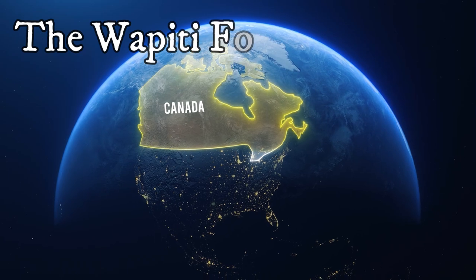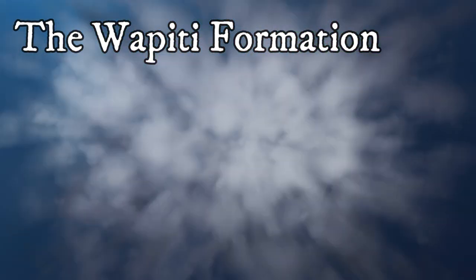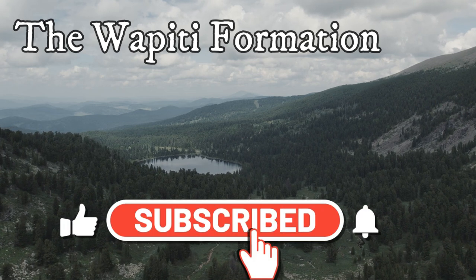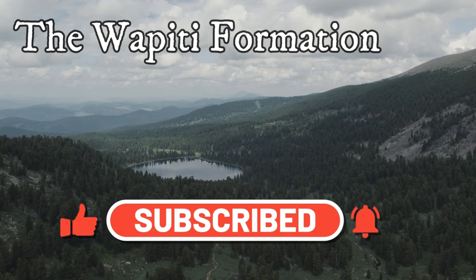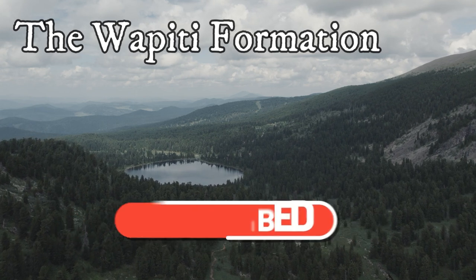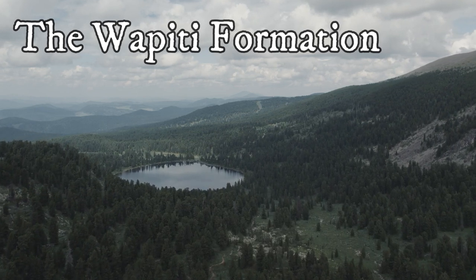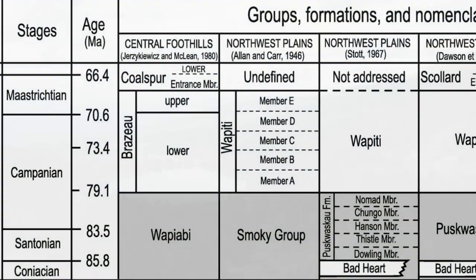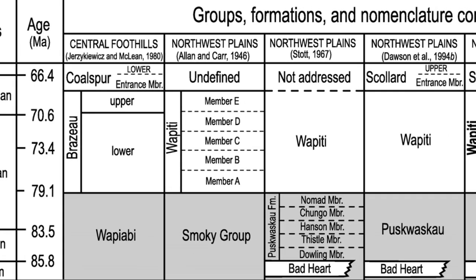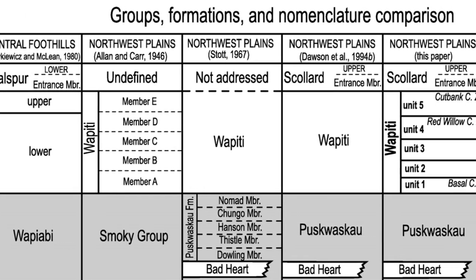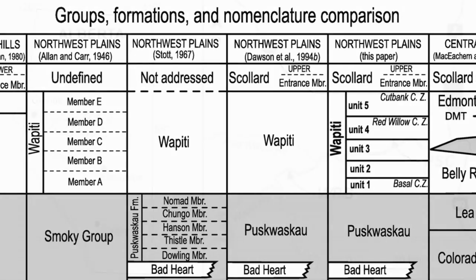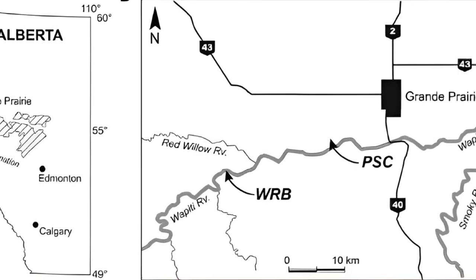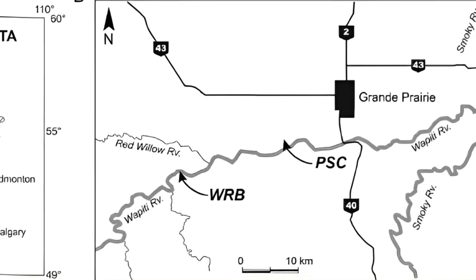The Wapiti Formation. The Upper Cretaceous Wapiti Formation is a geological formation of the Western Canadian Sedimentary Basin which spreads across northwestern Alberta and northeastern British Columbia. It is assigned to the Upper Cretaceous, approximately 80 to 68 million years ago. GM Dawson named it in 1881, ostensibly after the Wapiti River in Alberta.